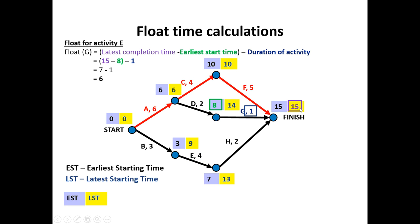Activity G, latest completion of fifteen. Subtracting an earliest starting time of eight. Gives me seven minutes available to get the project finished. I only require one. So I have again six minutes of float time. And finally H. I have a latest completion time of fifteen. Subtract from that the earliest starting time of seven. Means I have eight minutes in which to complete this task. I only require two. So this one also has a float time of six minutes.